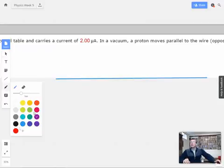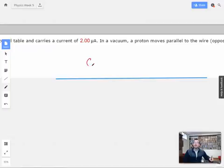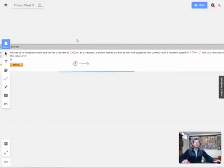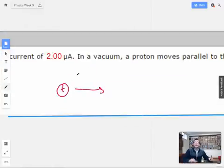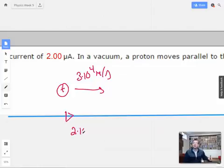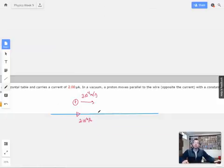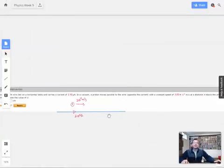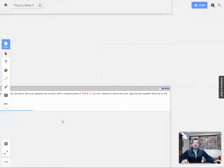And then proton, as everyone knows, has to be red. All right, so we've got a proton up here moving this direction at 3 times 10 to the 4th meters per second.